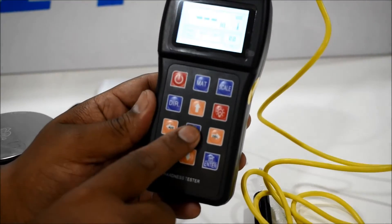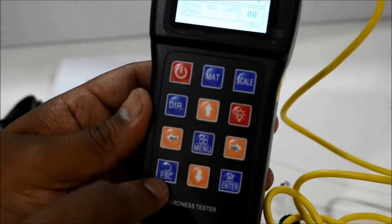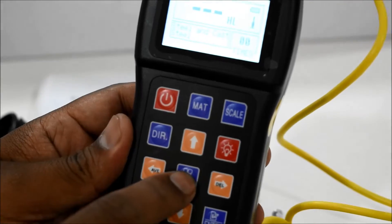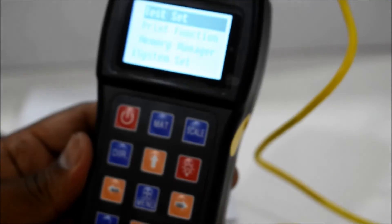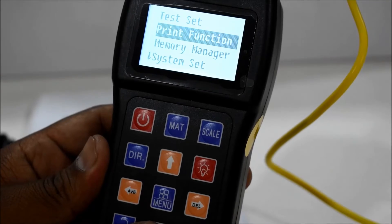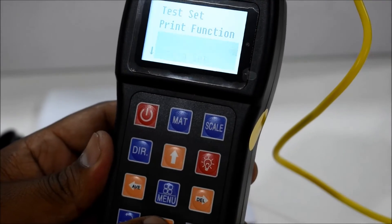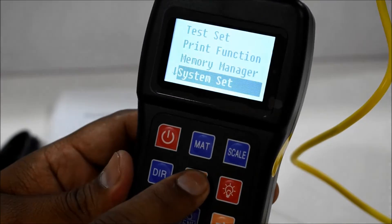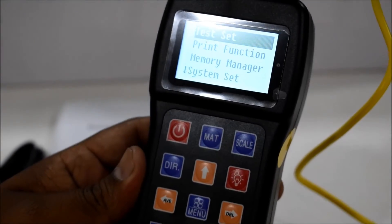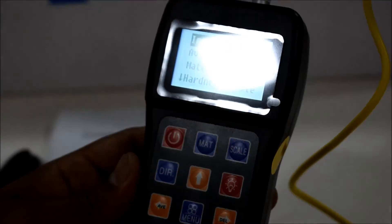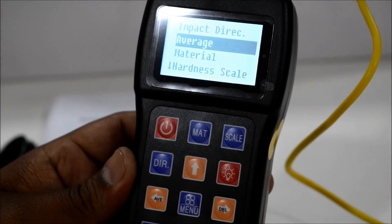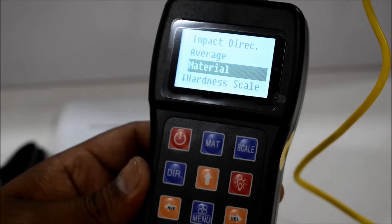There's an enter button and escape button, then the middle button is the menu button. The printer function, memory manager, and system set are available. In test set, the impact direction is already given to outside. Select average and material.